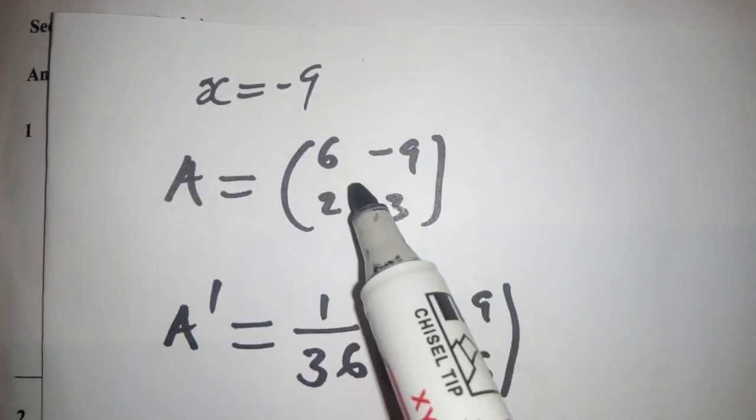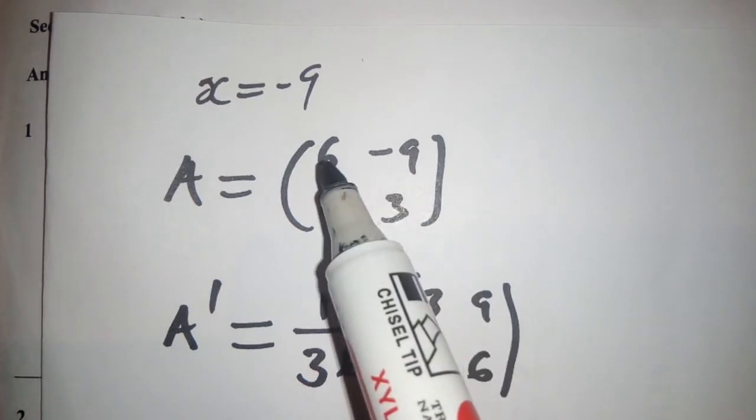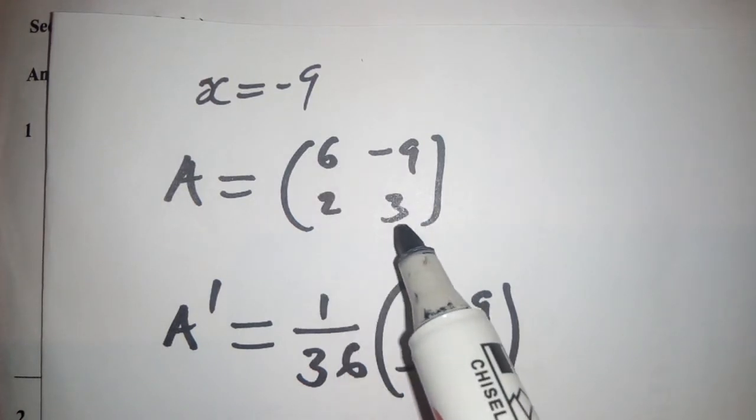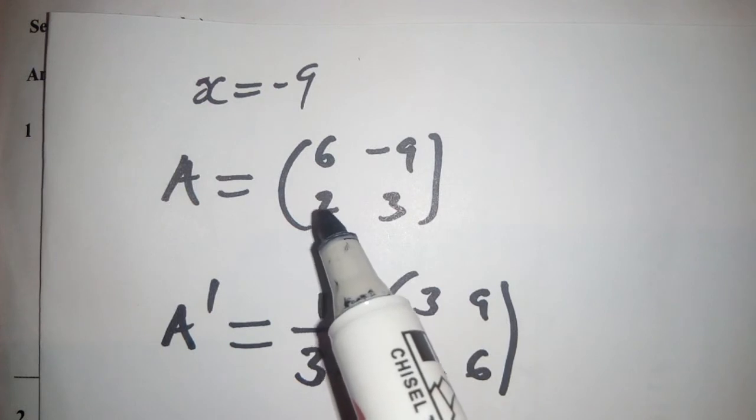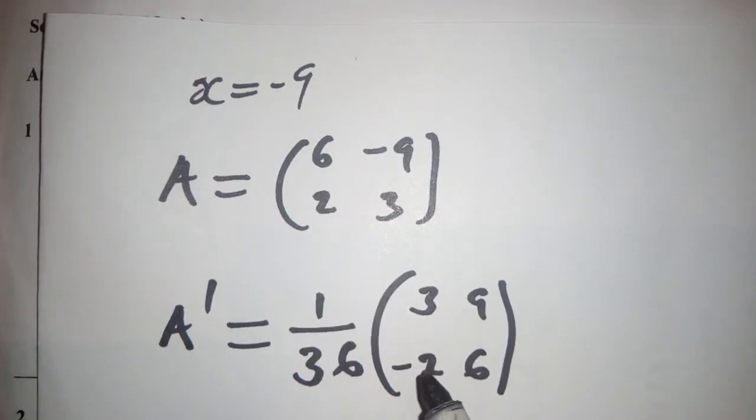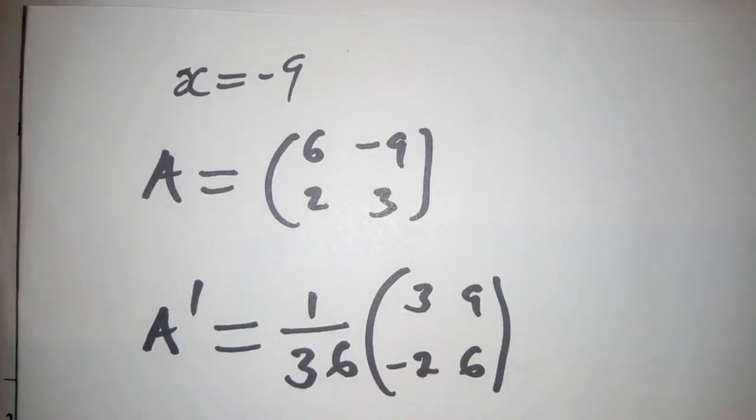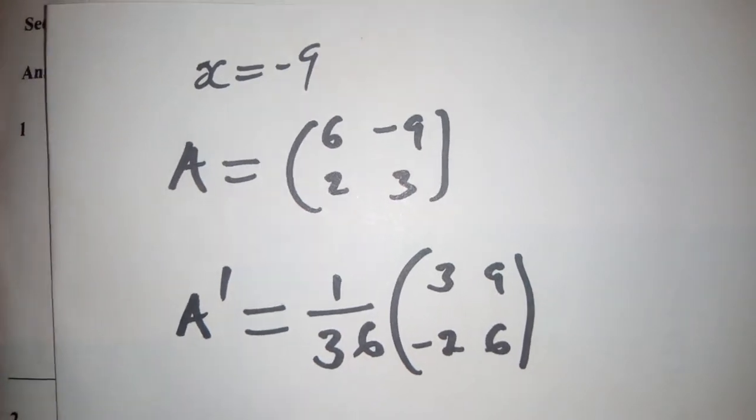Here we have changed the positions, 3 goes there where 6 is and 6 goes down, here 2 changes the sign, it becomes negative and 9 becomes positive.